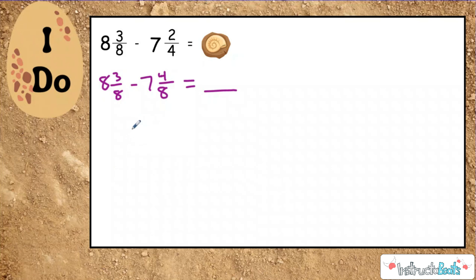So instead of regrouping, let's use our fact family knowledge to rewrite this as seven and four-eighths plus my missing addend would give me eight and three-eighths. We're going to count up today to do this.